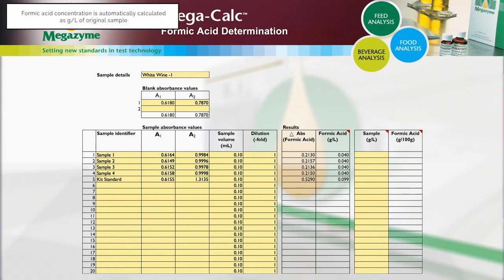When all of the data has been entered, the concentration of formic acid in the sample is automatically calculated and given as grams per litre in the original sample.